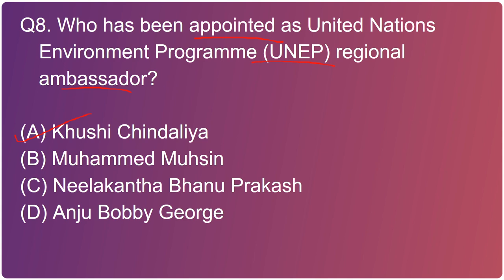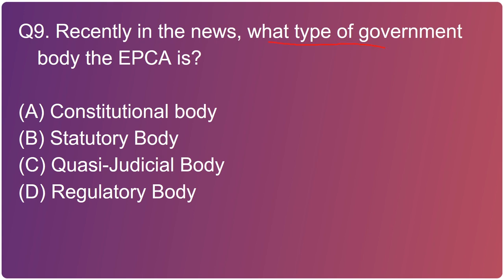Going to the next one: recently in the news, what type of government body is the EPCA? EPCA stands for Environmental Pollution Prevention and Control Authority. It is option B - a statutory body. The Environmental Pollution Prevention and Control Authority is a Supreme Court-mandated body constituted under Section 3 of the Environment Protection Act 1986 for the National Capital Region.